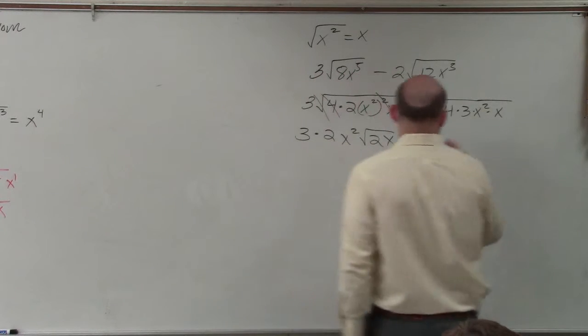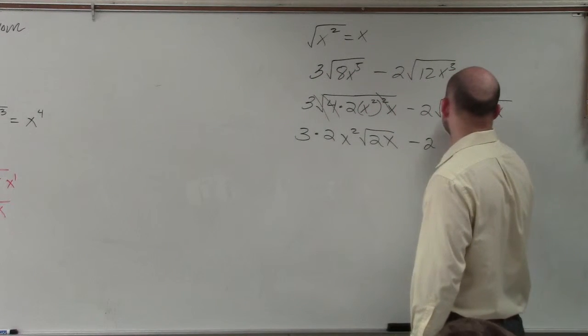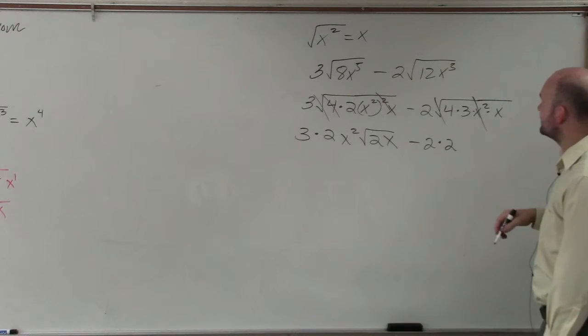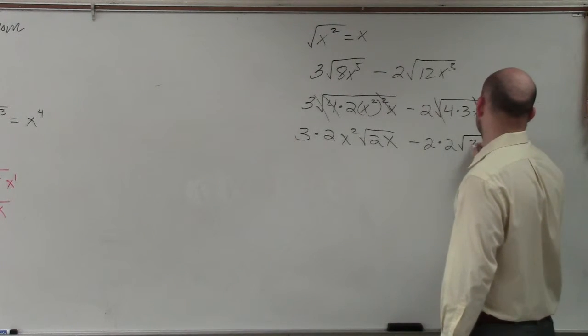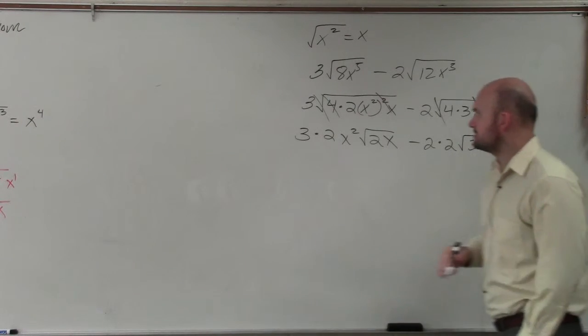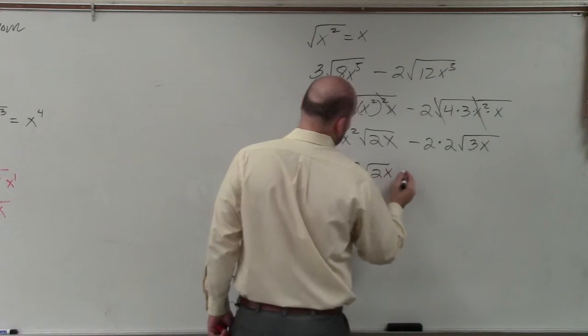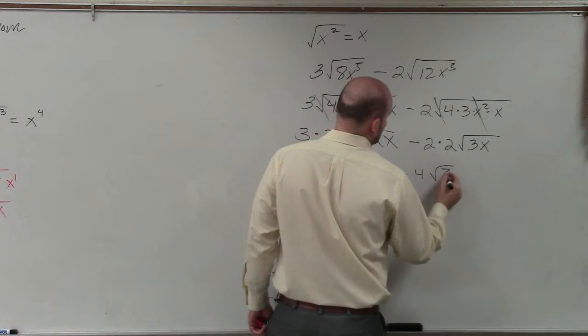And then over here, I have negative 2. Square root of 4 is 2. The x² comes out, leaving 3x. So I have 6x²√(2x) minus 4√(3x).